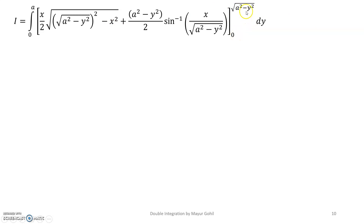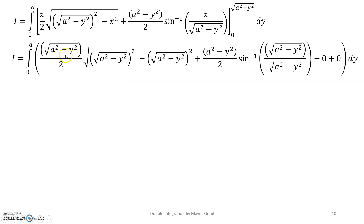Plug in the limits for x. For the upper limit √(a² − y²): the square root term becomes 0 since the same quantity squared is subtracted from itself. For the lower limit 0: the first quantity is 0 × anything = 0, and sin⁻¹(0) = 0. So the lower limit contribution is 0.